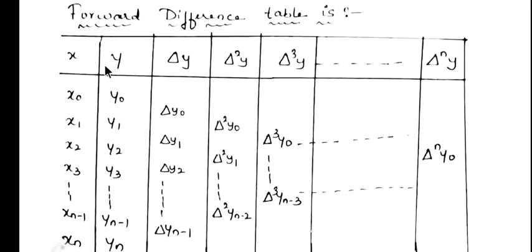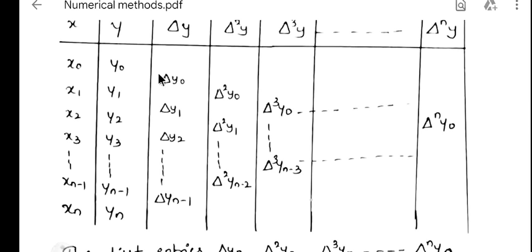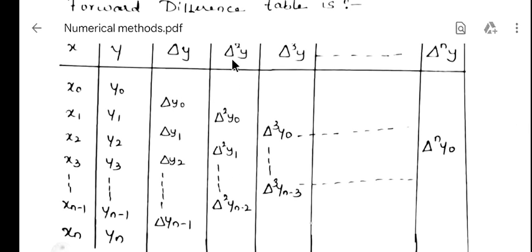The x and y values will be given. We are considering from the initial point, so the first value is x0 and y0, then x1, y1, x2, y2, and so on up to xn, yn. The first difference: delta y0 = y1 - y0, delta y1 = y2 - y1, delta y2 = y3 - y2, and so on, delta y(n-1) = yn - y(n-1). Next, the second difference: delta² y0 = delta y1 - delta y0, delta² y1 = delta y2 - delta y1, and so on.